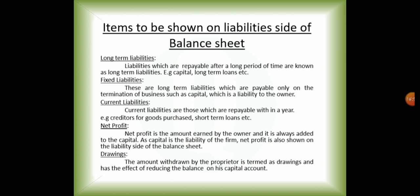Also on the liability side: net profit is represented there since capital is also represented on the liability side — though profit is an asset to us, it is shown on the liability side. Finally, drawings — which means withdrawals — are also on the liability side. For example, if capital is ten thousand rupees but you withdraw five thousand rupees in between, that withdrawal is also represented on the liability side.